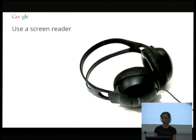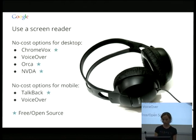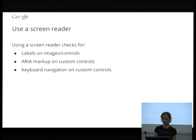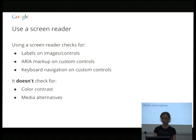However, keyboard-only testing does not check for things like labels on images and controls, ARIA markup on custom controls, or colour contrast — you may have great eyesight and not realise something is too low contrast for someone with poor eyesight. It doesn't check for media alternatives like subtitles on a video or transcripts. The second step: just try it out with a screen reader. It'll tell you if there are any showstoppers. ChromeVox, Orca, NVDA are all free and open source for desktop, and TalkBack is free and open source for Android phones. It's a high noise way to check, and it's really slow.